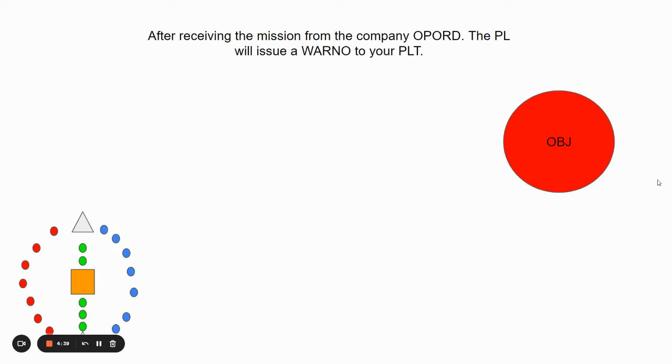After receiving the mission from your company op ward, the platoon leader will issue a war node to your platoon and the platoon leader will come up with a terrain model along with a platoon op board, along with all the other members of HQ with the squad leaders.